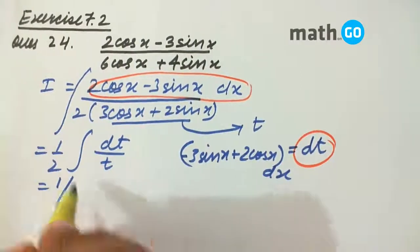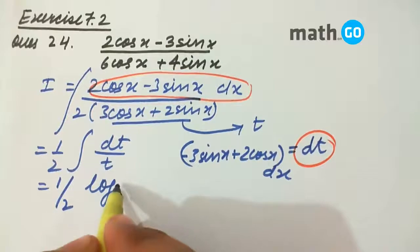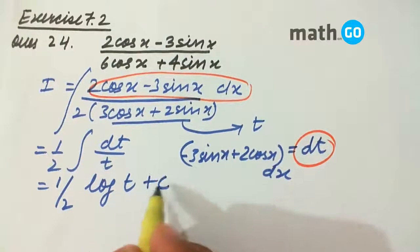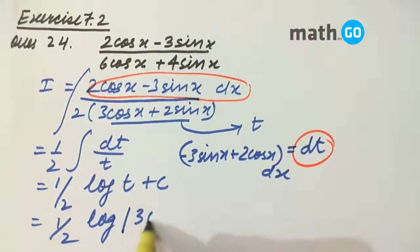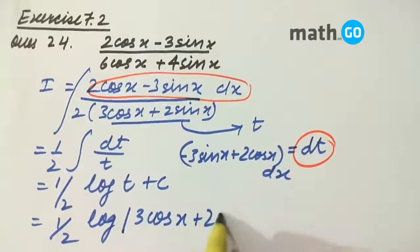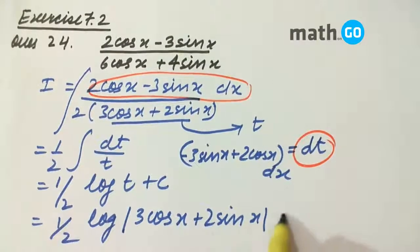This is nothing but half of log t plus c. And keeping the value of t, we get log of mod of 3 cos x plus 2 sin x plus c.